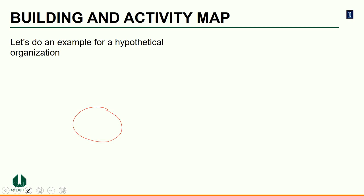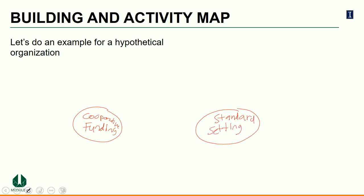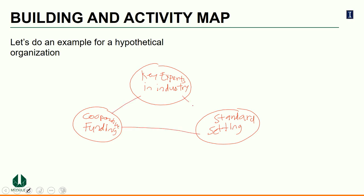For this hypothetical organization, the three value proposition elements are: corporate funding, standard setting, and attracting key experts in the industry. These make up the core components of the value proposition — the elements that the organization believes enable it to deliver high value to both the organization itself and its customer base. The next question is: what activities will the organization engage in to deliver on these value proposition elements?